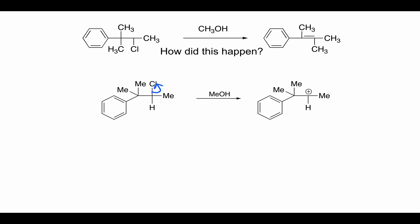A 1,2-hydride or methyl shift occurs — the intramolecular nucleophile does a 1,2-somato shift — producing a tertiary cation. And it's not just any tertiary cation: it's a benzylic cation, which has hyperconjugative stabilization from three substituents, plus extensive resonance stabilization from the six-membered ring. Resonance contributors can place the positive charge at multiple positions around the ring, giving excellent resonance stabilization.